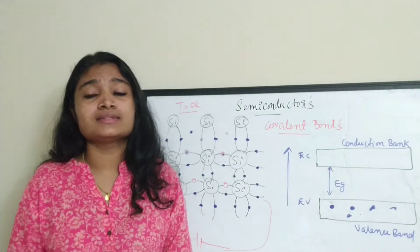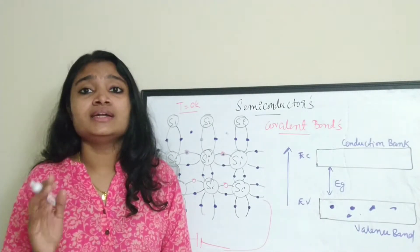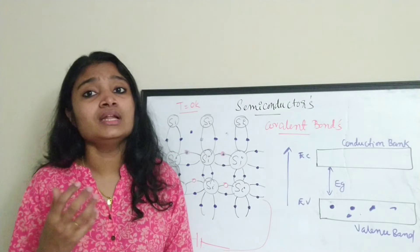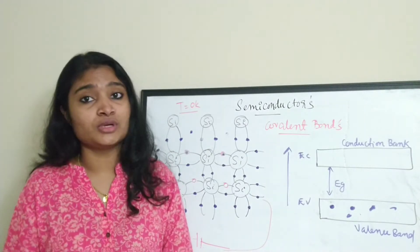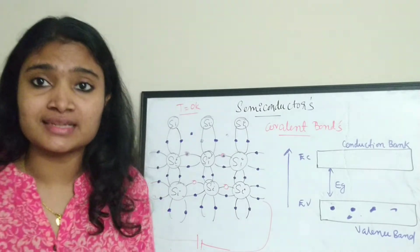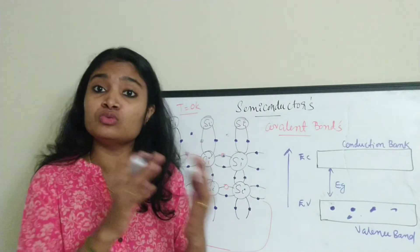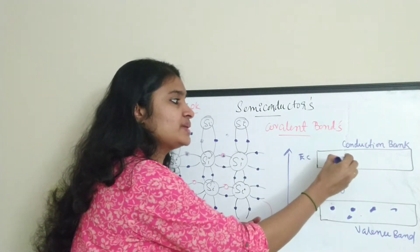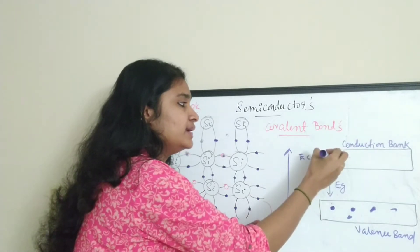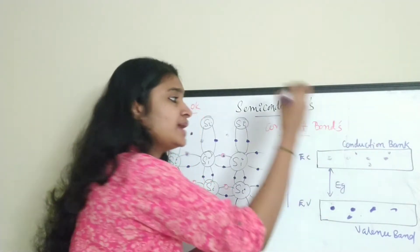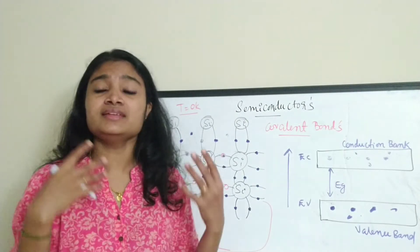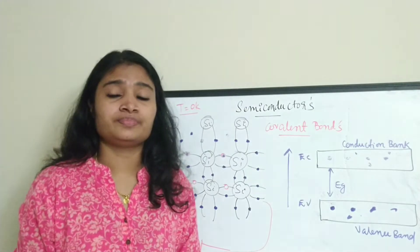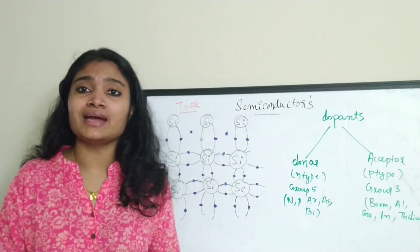When temperature is increased, free carriers are generated inside the semiconductor and conductivity increases, or resistance decreases. Semiconductors have a negative temperature coefficient of resistance — when temperature increases, resistance decreases. When temperature increases, electrons move from the valence band to the conduction band. These free electrons are present in the conduction band and hence conductivity increases.